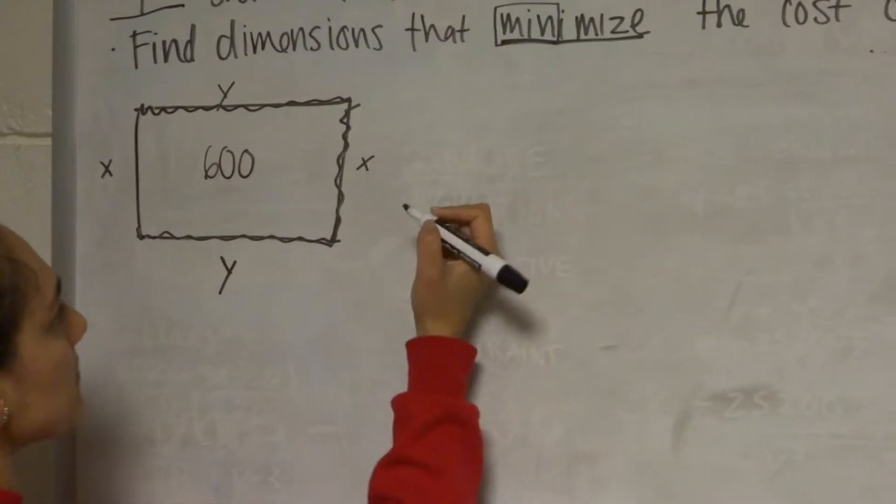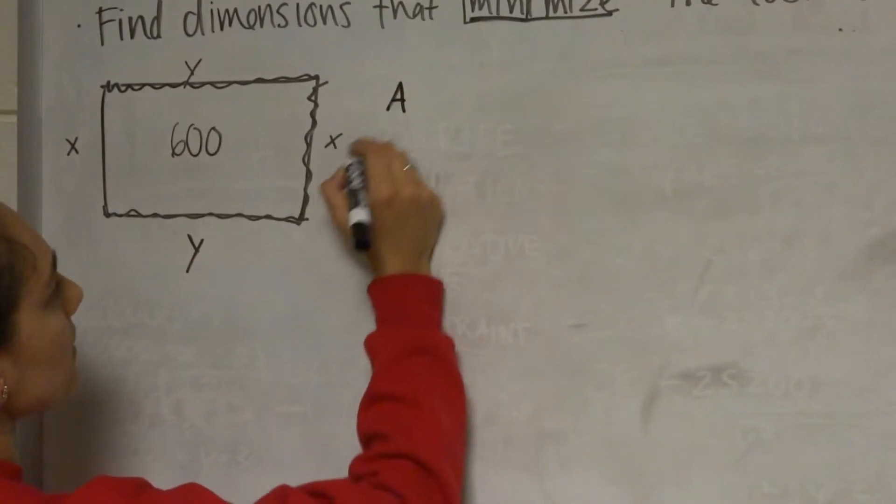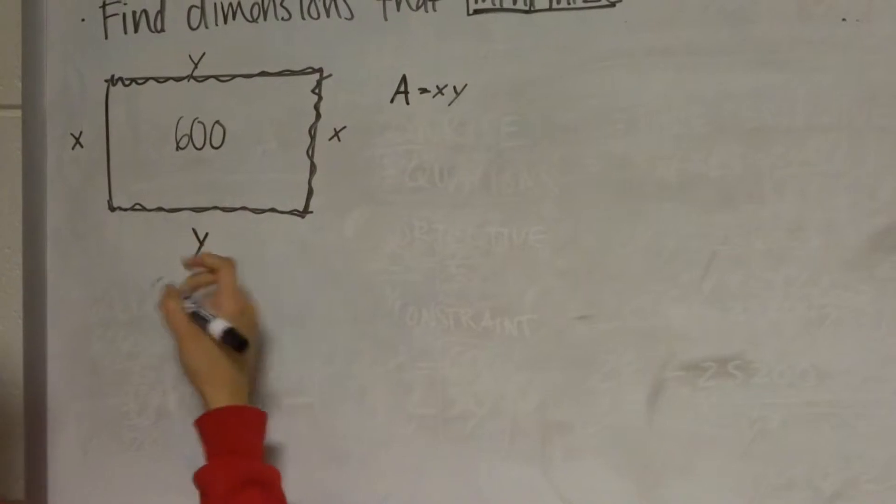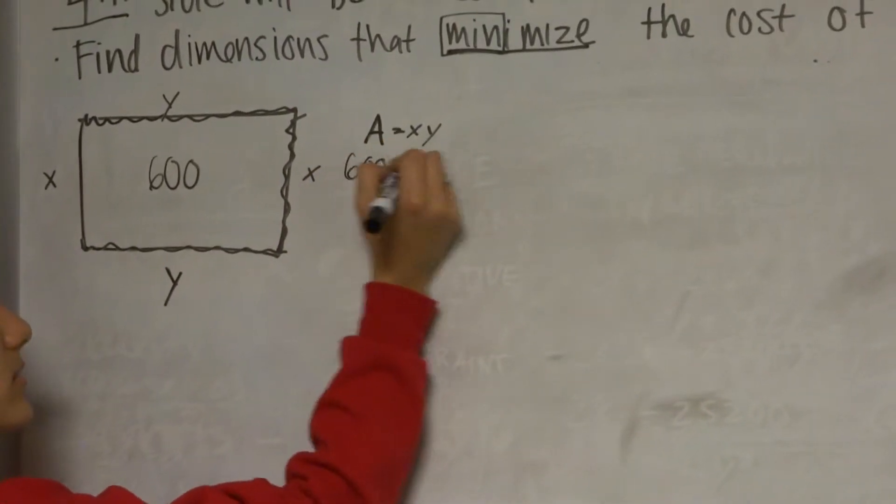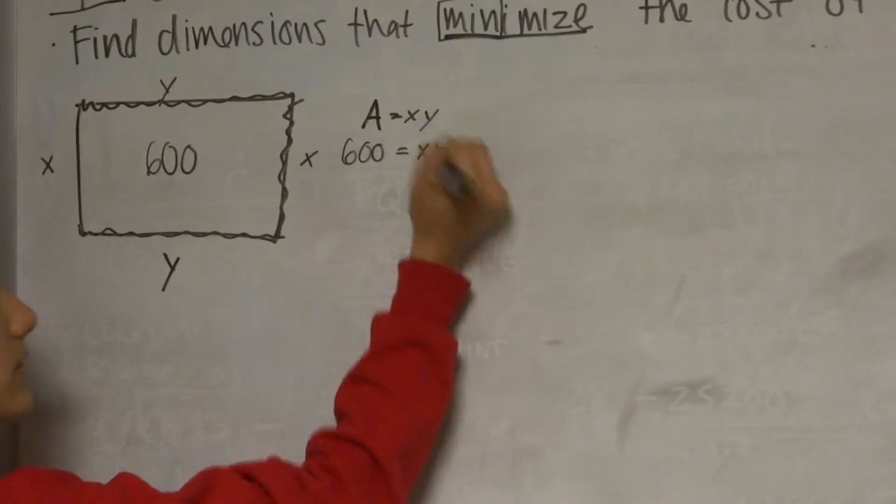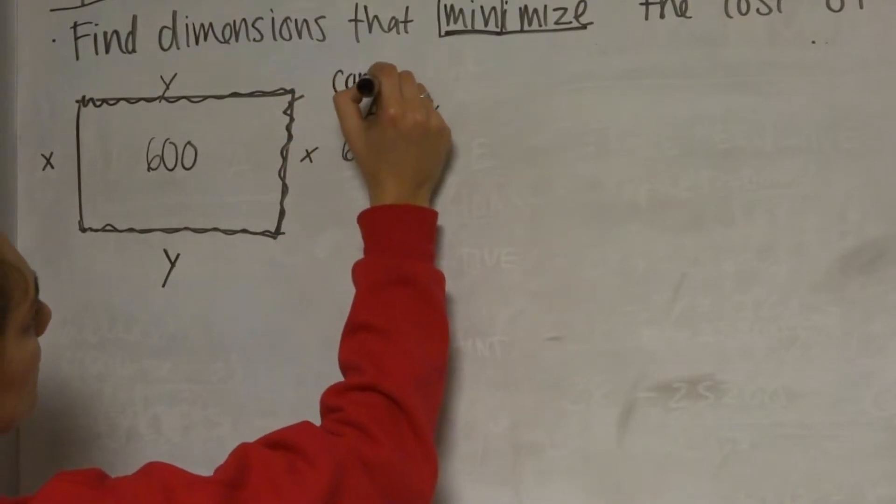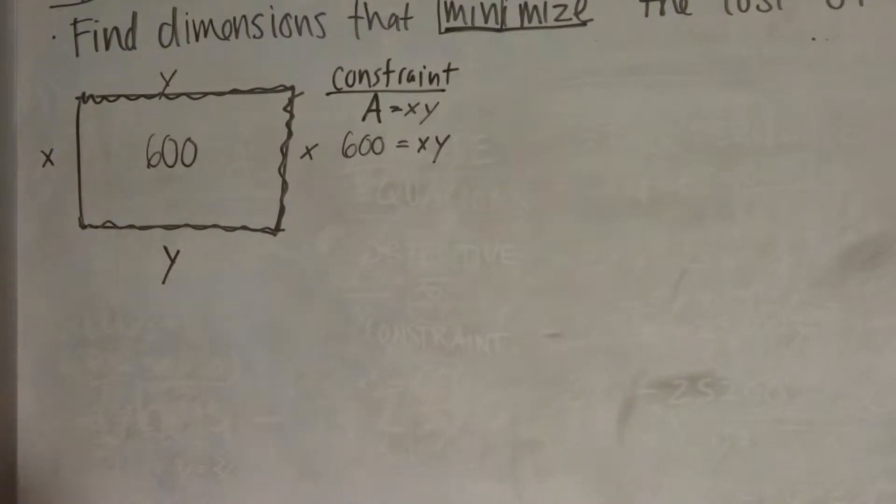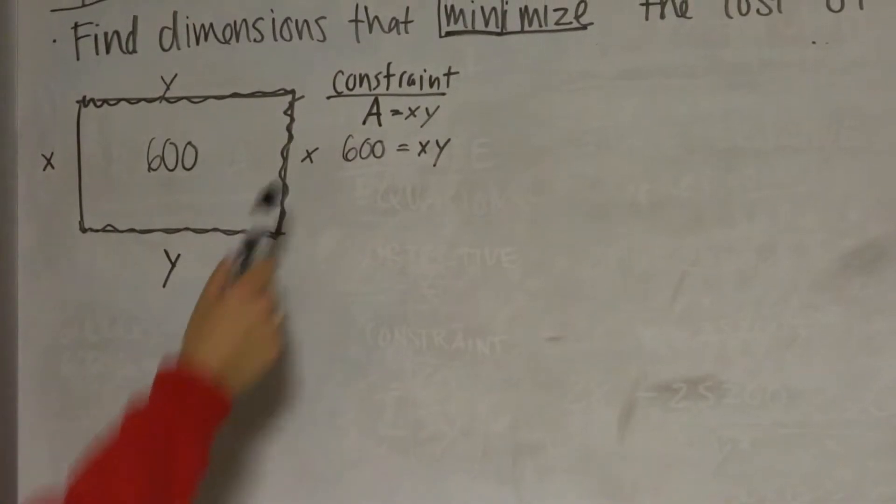First we want to write an area equation and we already know that the area of this is 600 square feet. Area is length times width, so for us we can say it's x times y, and we already know that it's 600 so we can set this equation equal to 600.